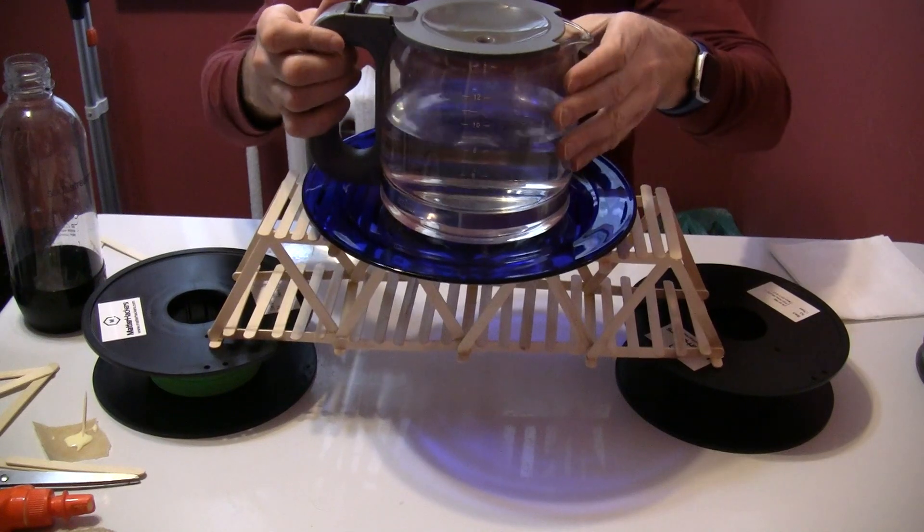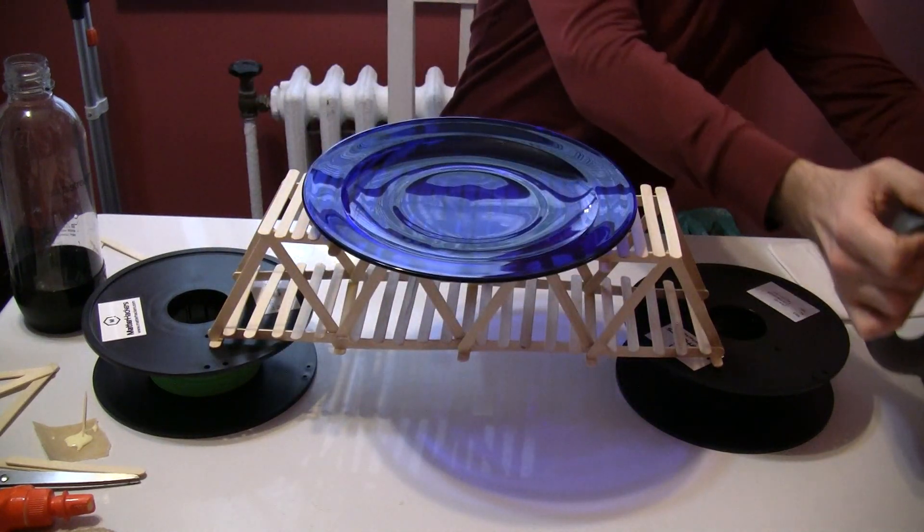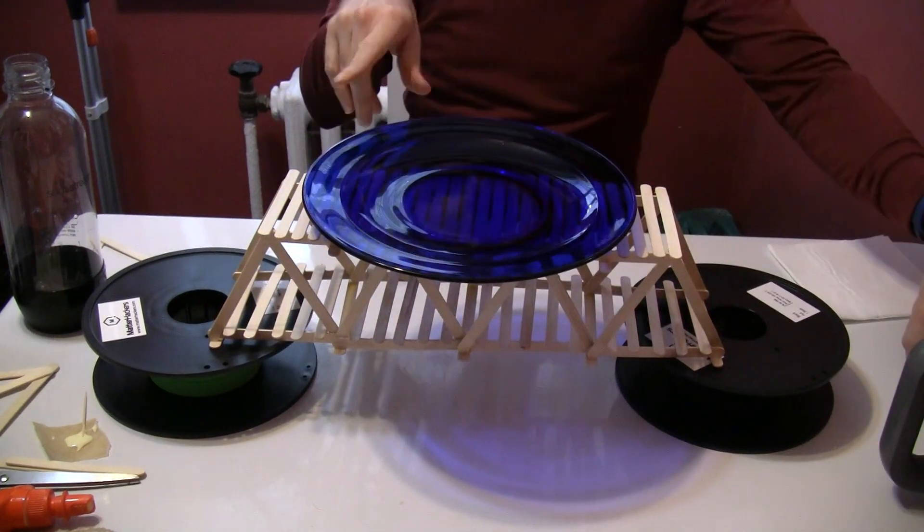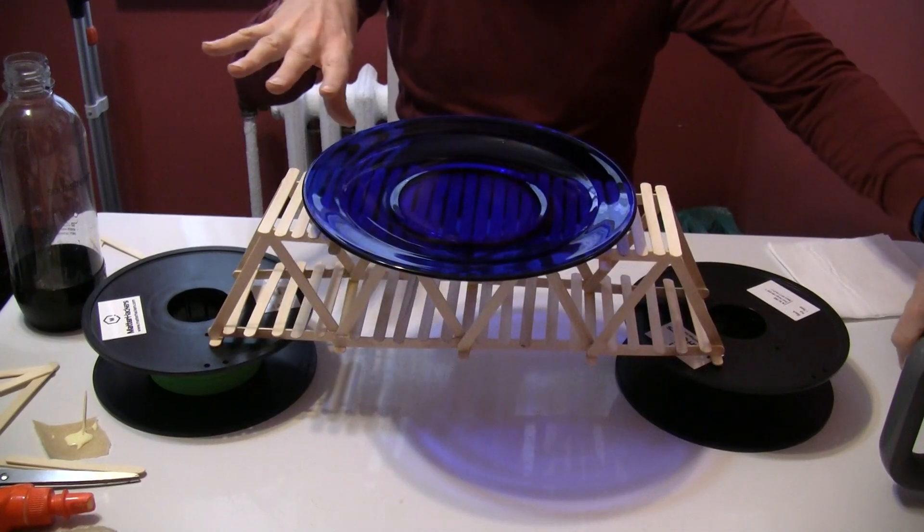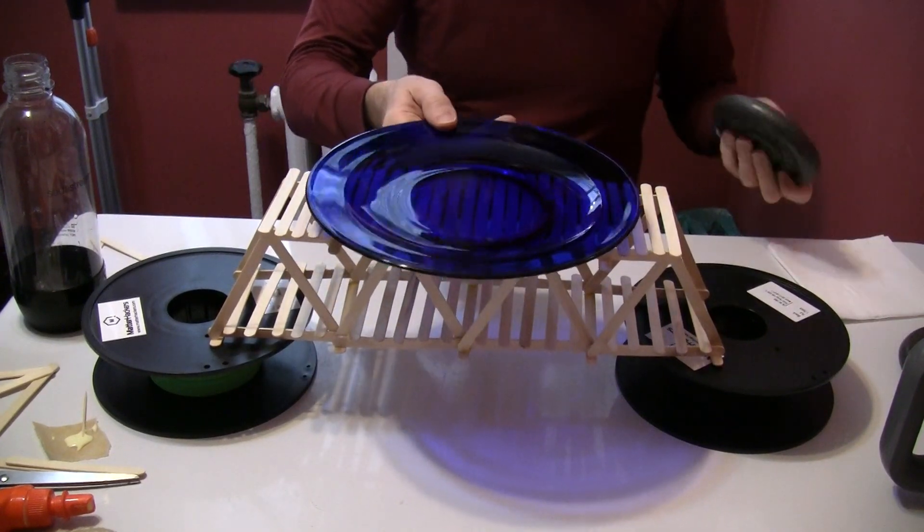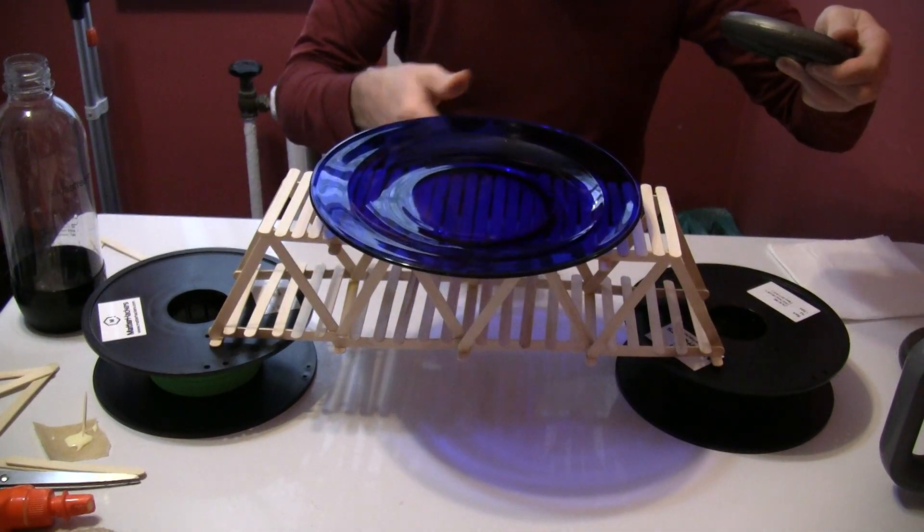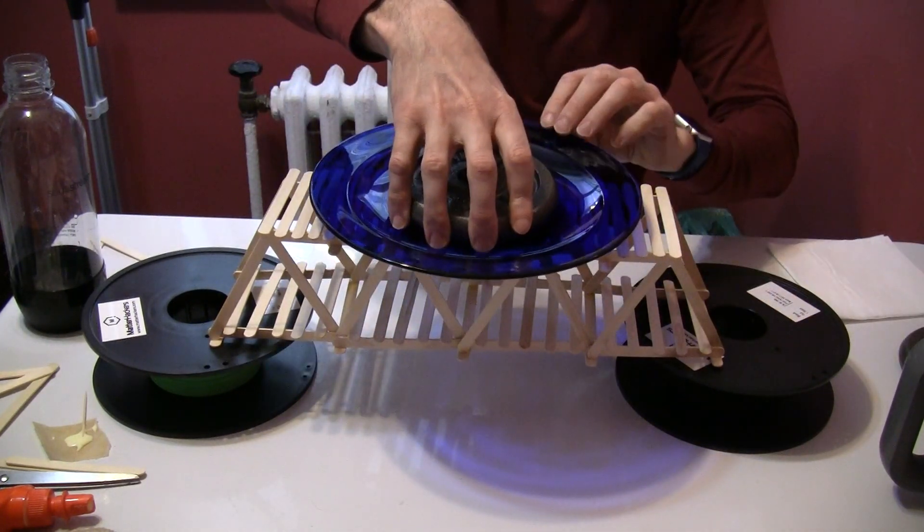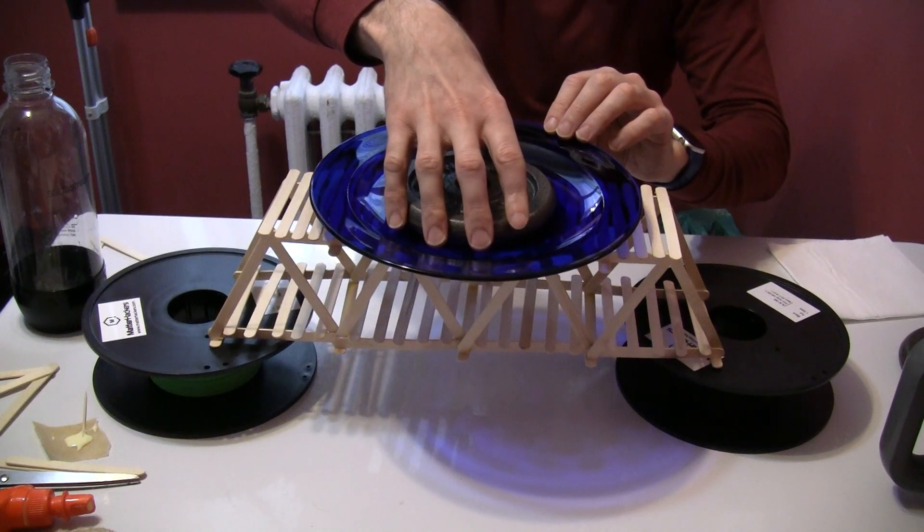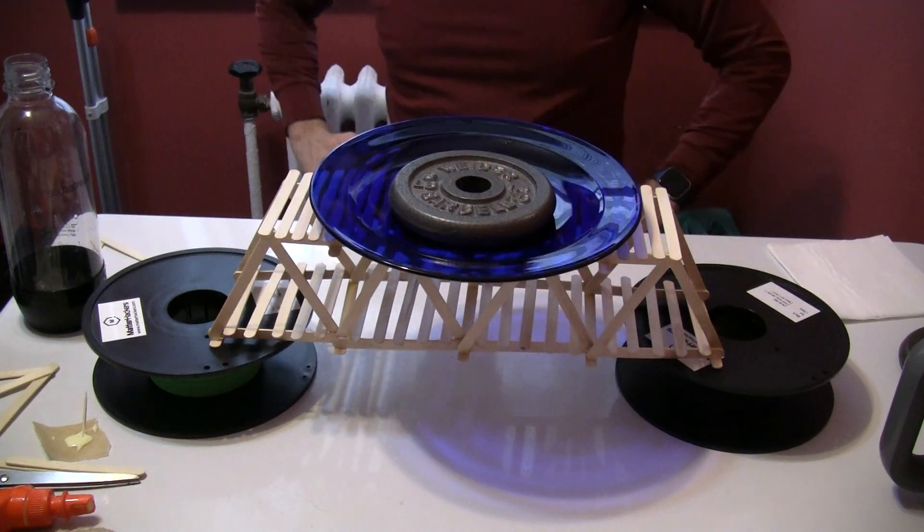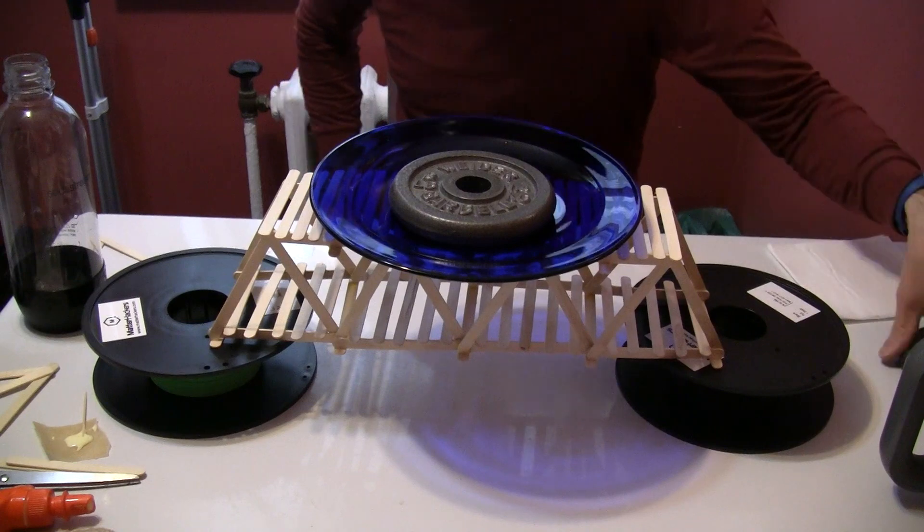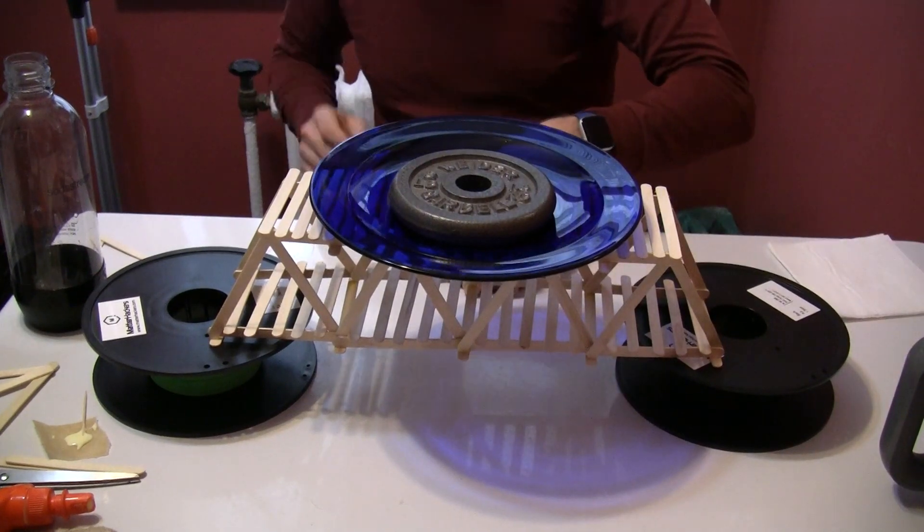So now I'm going to be daring and grab one of these three pound weights. So one thing about the plate is that it spreads the weight evenly across the bridge, whereas if I just put a three pound weight in the center, I'm pretty sure that's going to just crush it. So hopefully this will help. Oh, okay. I'm actually, I'm pleasantly surprised. All right. So I got three pounds.